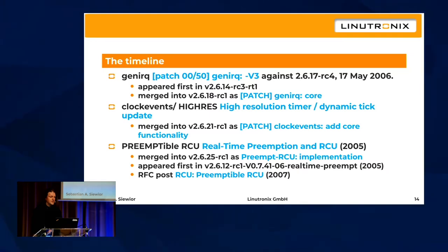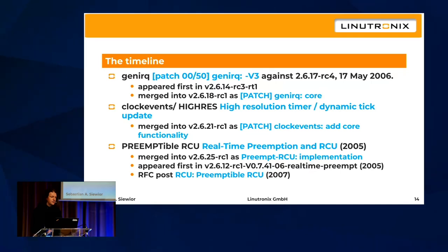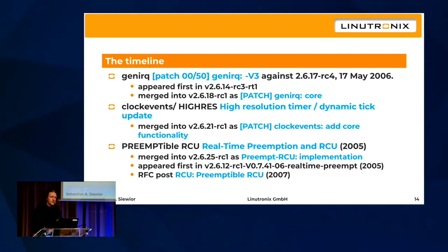Preemptable RCU appeared in 2.6.12 in the RT patch set, allowing tasks to remain preemptable in the read critical section. Before that, Ingo Molnar manually tracked every RCU section and replaced it with a read-write semaphore — which didn't scale, since there are thousands of nested RCU sections in the kernel. Preemptable RCU done by Paul McKenney was a real saver here.